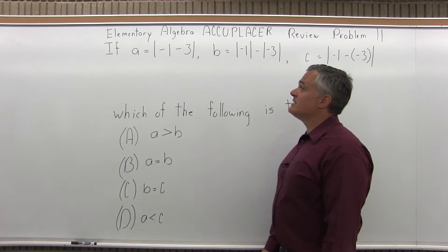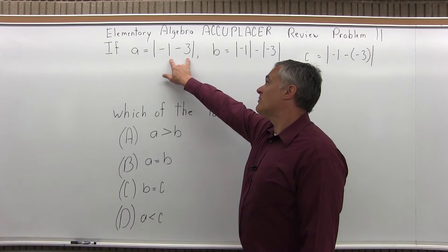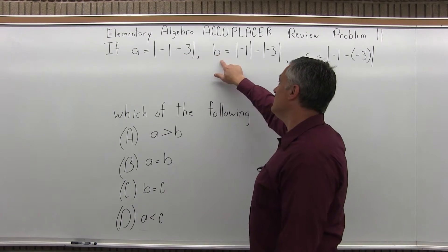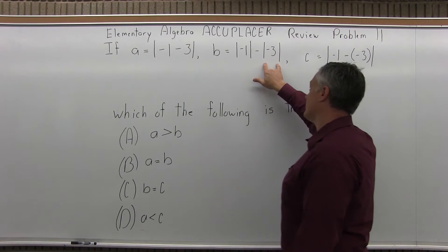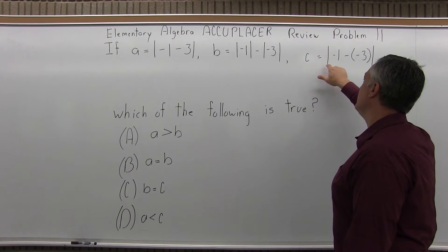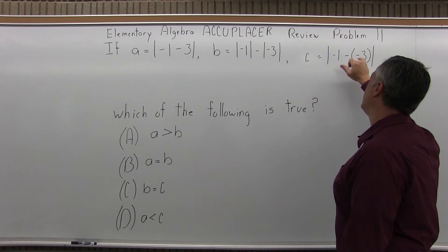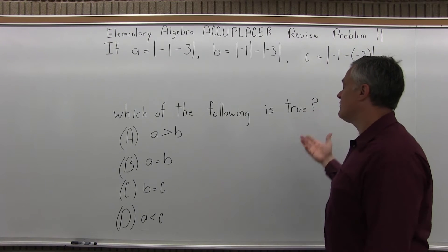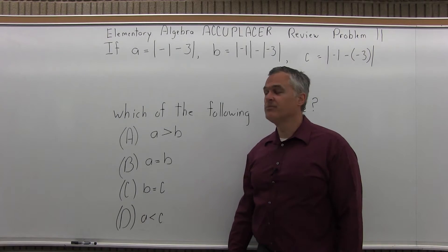The problem says: if A equals the absolute value of negative 1 minus 3, B equals the absolute value of negative 1 minus the absolute value of negative 3, and C equals the absolute value of negative 1 minus a minus 3, then which of the following is true? There are four options to choose from.